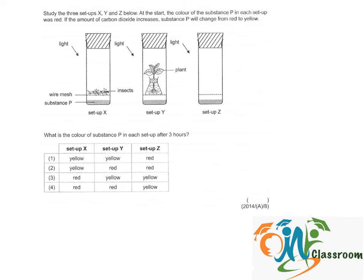So we have three setups. In setup X, we have insects. Insects will take in oxygen and give out carbon dioxide. So the carbon dioxide content in X will increase, hence it will turn the substance P yellow.